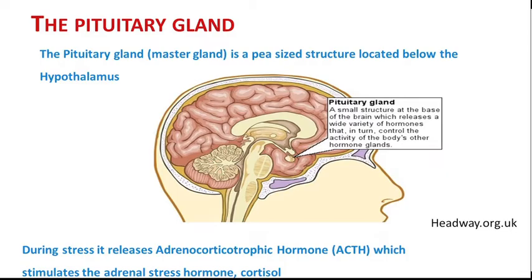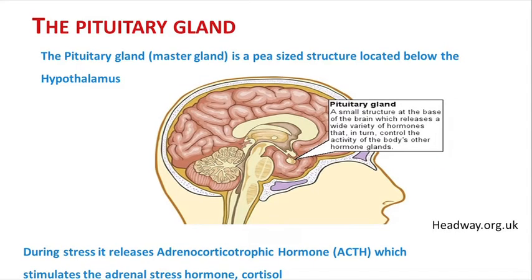The pituitary gland is a pea-sized structure located just below the hypothalamus. During stress it controls the activity of the body's other hormone glands. During stress it releases a hormone known as adrenocorticotrophic hormone (ACTH), which stimulates the adrenal stress hormone cortisol.